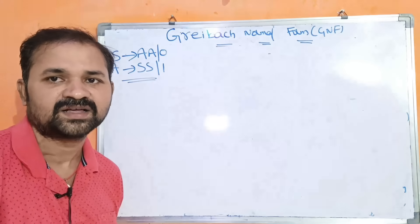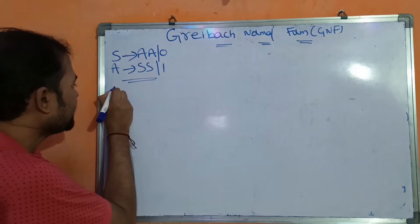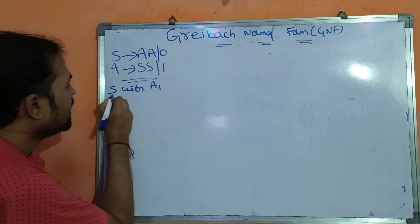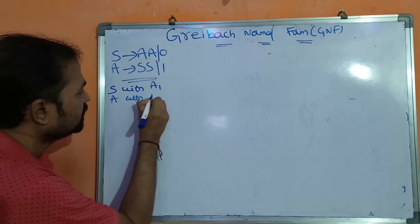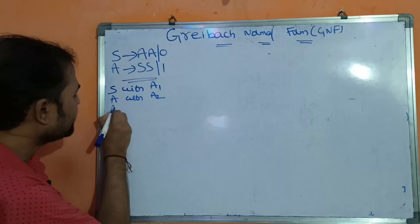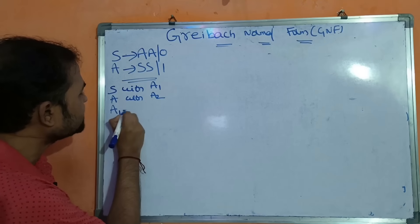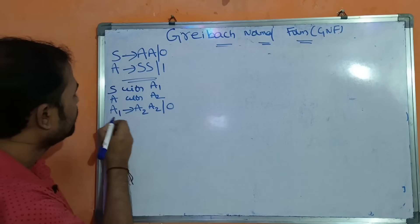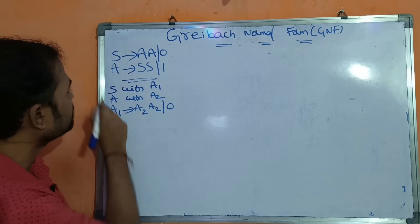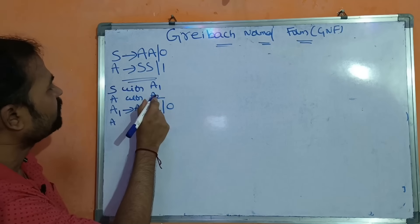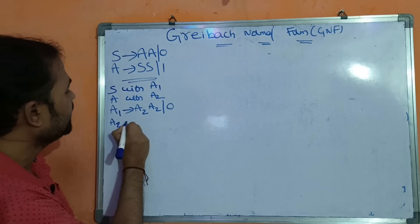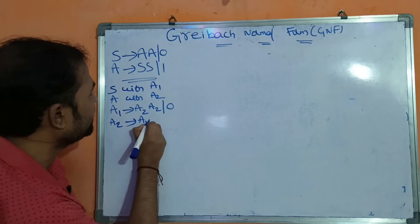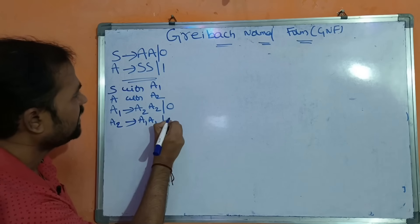Next, we replace S with A1 and A with A2. So the grammar becomes: A1 implies A2 A2 | 0, and A2 implies A1 A1 | 1.